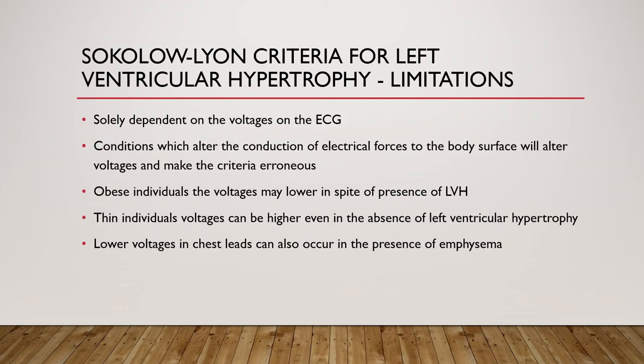There are certain limitations for the Sokolov-Lyon criteria for left ventricular hypertrophy. They are solely dependent on the voltages on the ECG. Conditions which alter the conduction of electrical forces to the body surface will alter voltages and make the criteria erroneous. Obese individuals have lower voltages in spite of the presence of left ventricular hypertrophy. In thin individuals, voltage can be higher even in the absence of left ventricular hypertrophy, and lower voltages in chest leads can also occur in the presence of pulmonary emphysema.